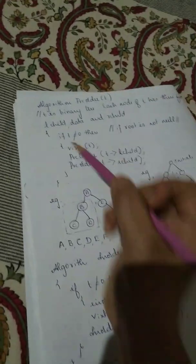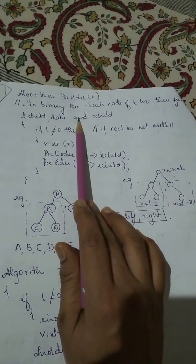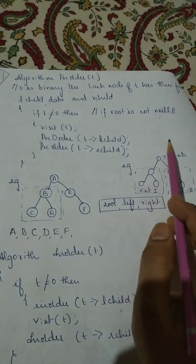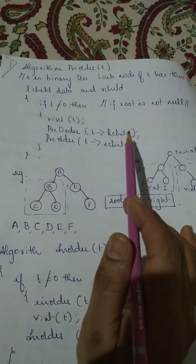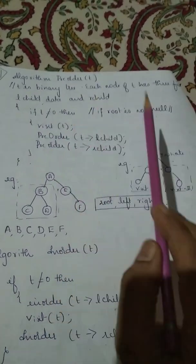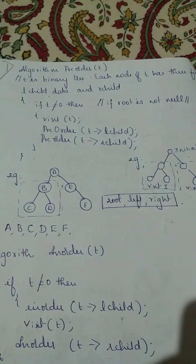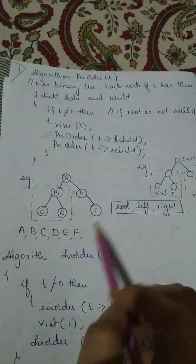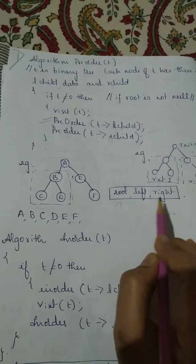First we will see the pre-order traversal. We check the algorithm for pre-order traversal. If T is a binary tree, each node of T has three fields: left child, right child, and its root node. If T is not null, that means the root has branches — visit root node, then call pre-order for the left child first, and once that is completed, go for the right child. The condition for pre-order is: root, left, right.